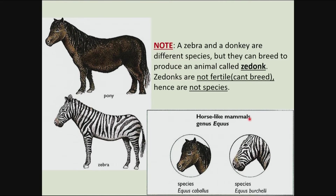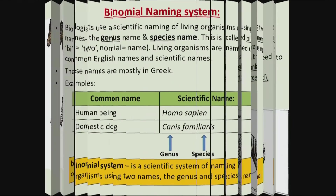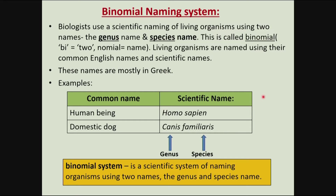Let's look at a zebra and a donkey. These two animals are of different species, but a zebra and a donkey can breed and produce an animal called a zedonk. However, zedonks are not fertile — they cannot reproduce. Therefore we don't consider zedonks as a species; they have been produced by a zebra and a donkey but are not a species because their offspring are not fertile.